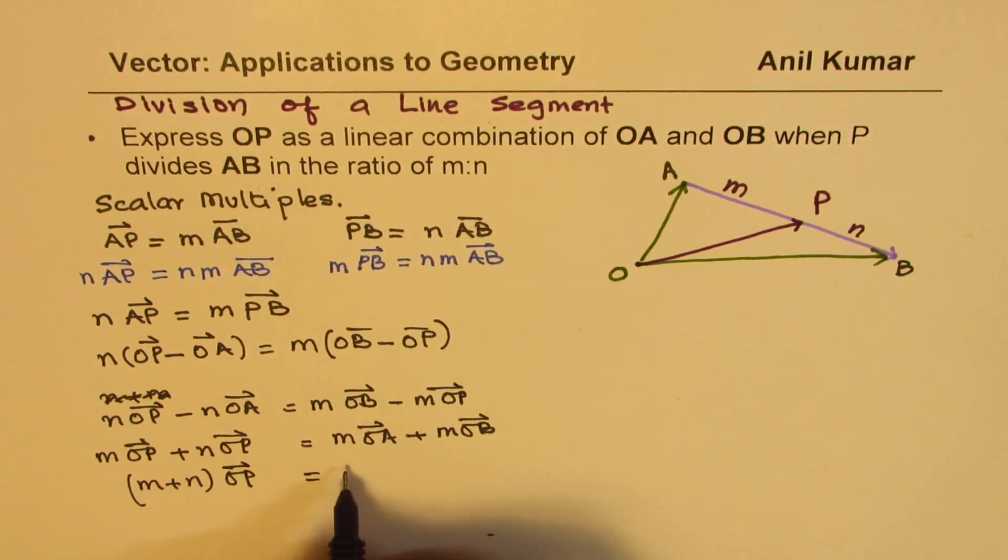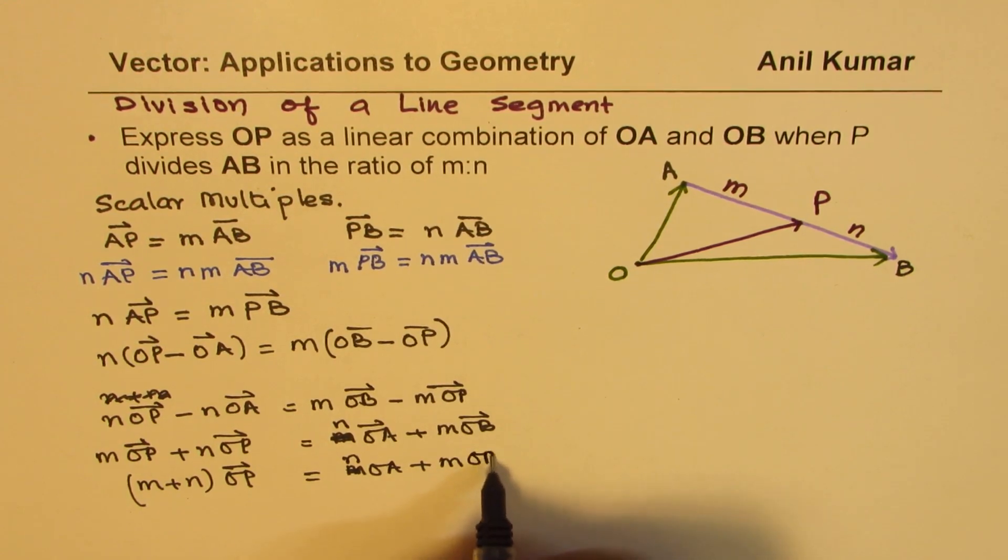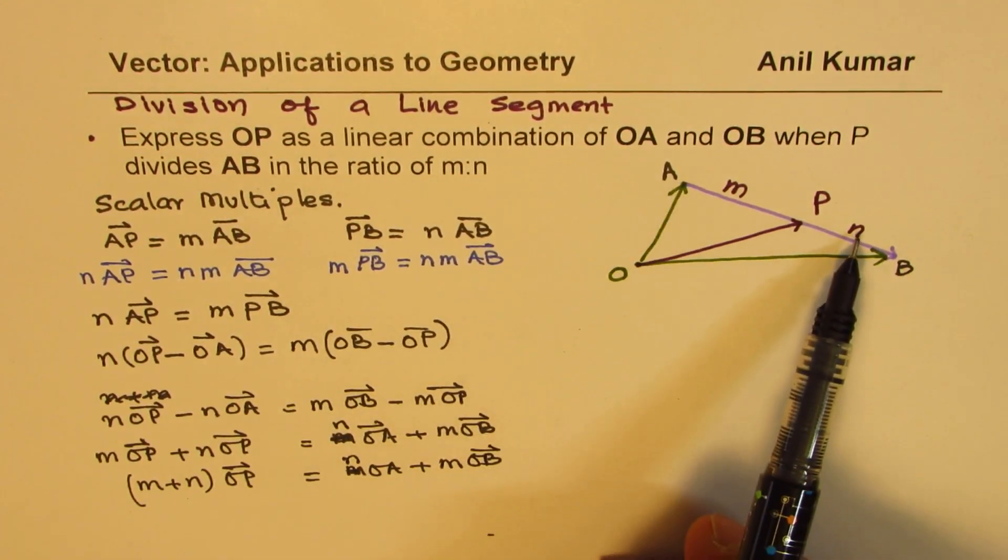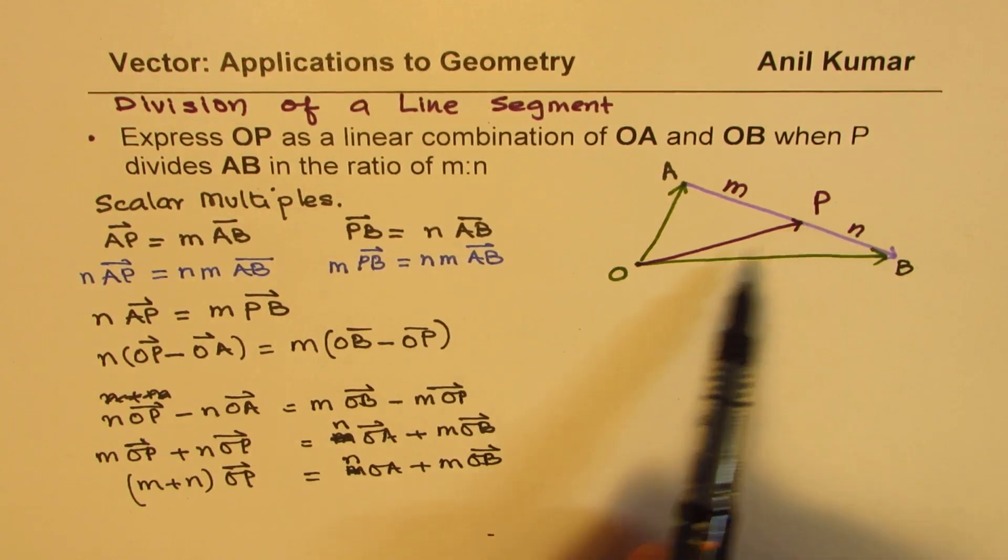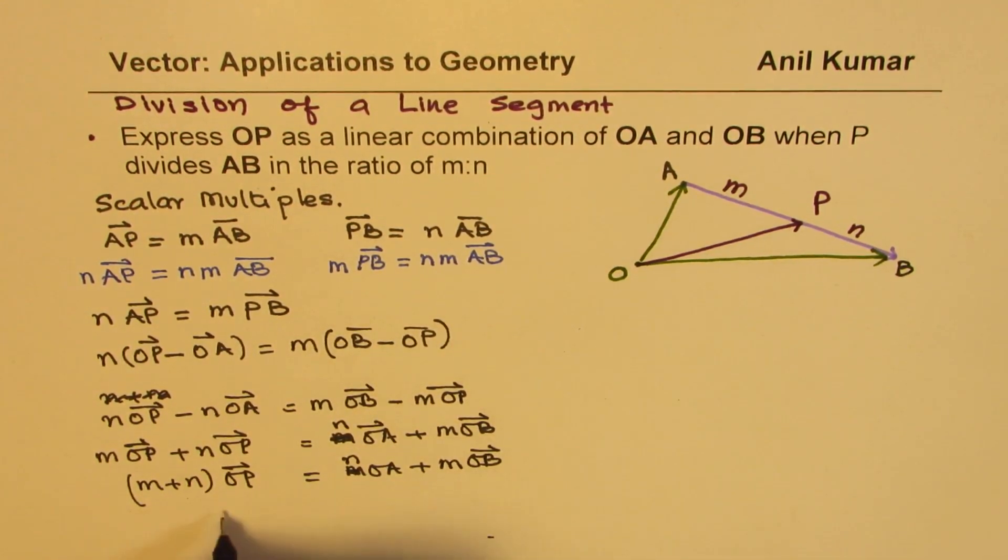We get here M times OA plus, what did I do? N. This is O, OA is with N times. So this is N. N OA I took to the right, so this is N. And we have M times OB. Basically, OA gets multiplied by that number, and OB gets multiplied by this number.